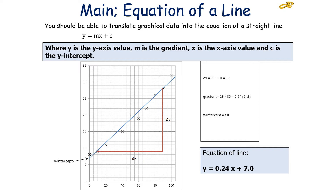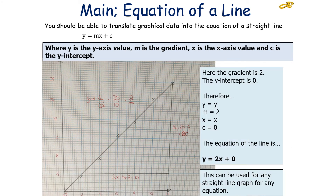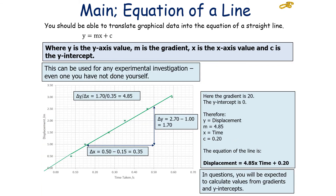We know y = mx + c, where y is the y-axis value, m is the gradient, x is the x-axis value, and c is the y-intercept. You can look at the data you've been given to work out the equation of the line. In this example, the y-axis is y and the x-axis is x. We've worked out the gradient to be 2, and we can see the y-intercept is 0. So the equation of the line is y = 2x + 0. You can do this for any straight line graph.